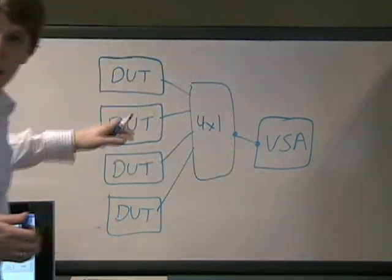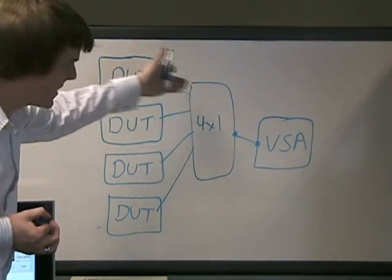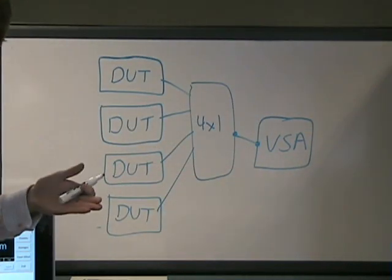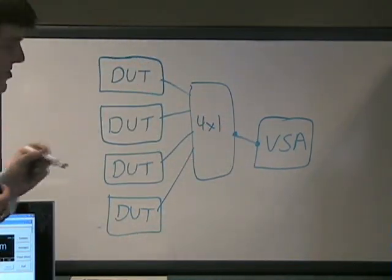Now the problem with this scenario is that we actually have to calibrate the path loss between each device under test and our vector signal analyzer. In fact, there's a lot of different things that can contribute to path or insertion loss.